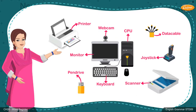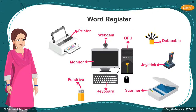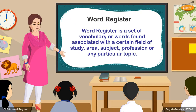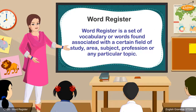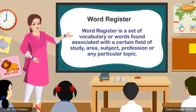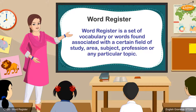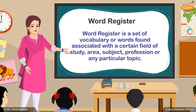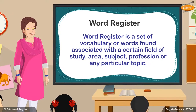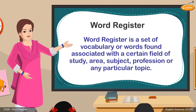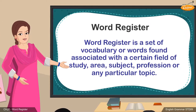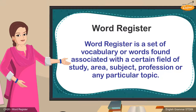All these kinds of things come under a separate unit called word register. Word register is a set of vocabulary or words found associated with a certain field of study, area, subject, profession, or any particular topic. The doctors will have their own word register which will widely differ from that of a teacher, businessman, engineer, etc. In a broader sense, any paragraph or an extract given on a particular topic will have a certain particular set of words which will be either similar or strictly related to the topic discussed.